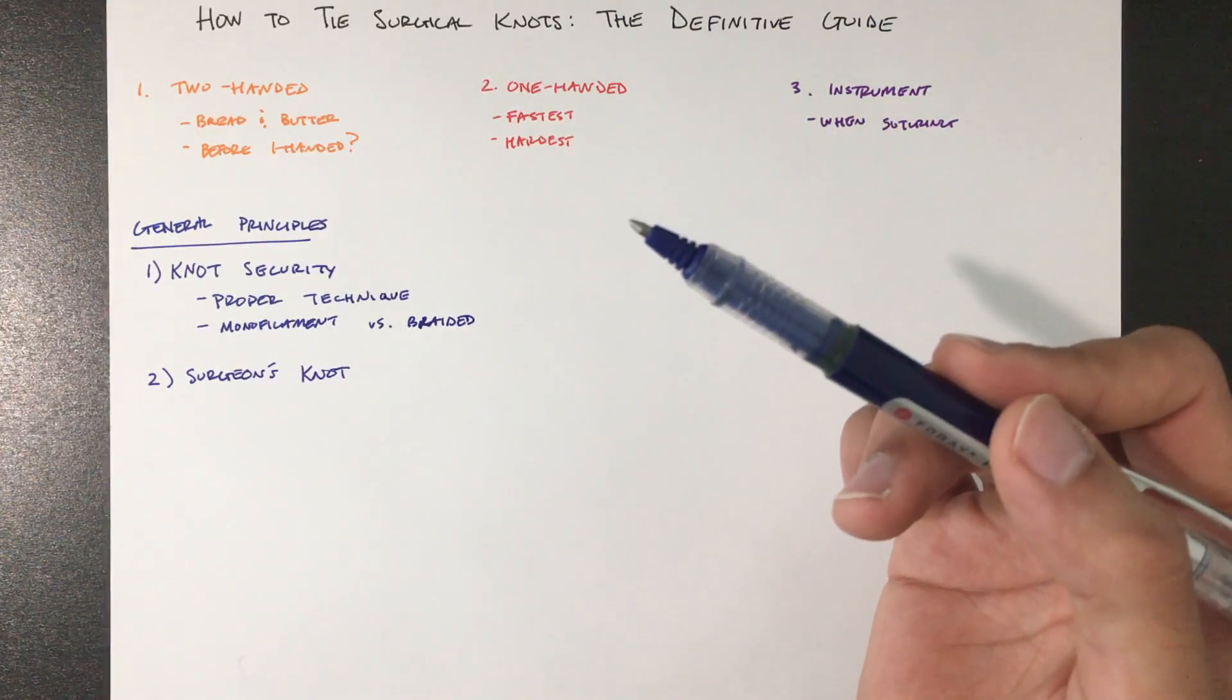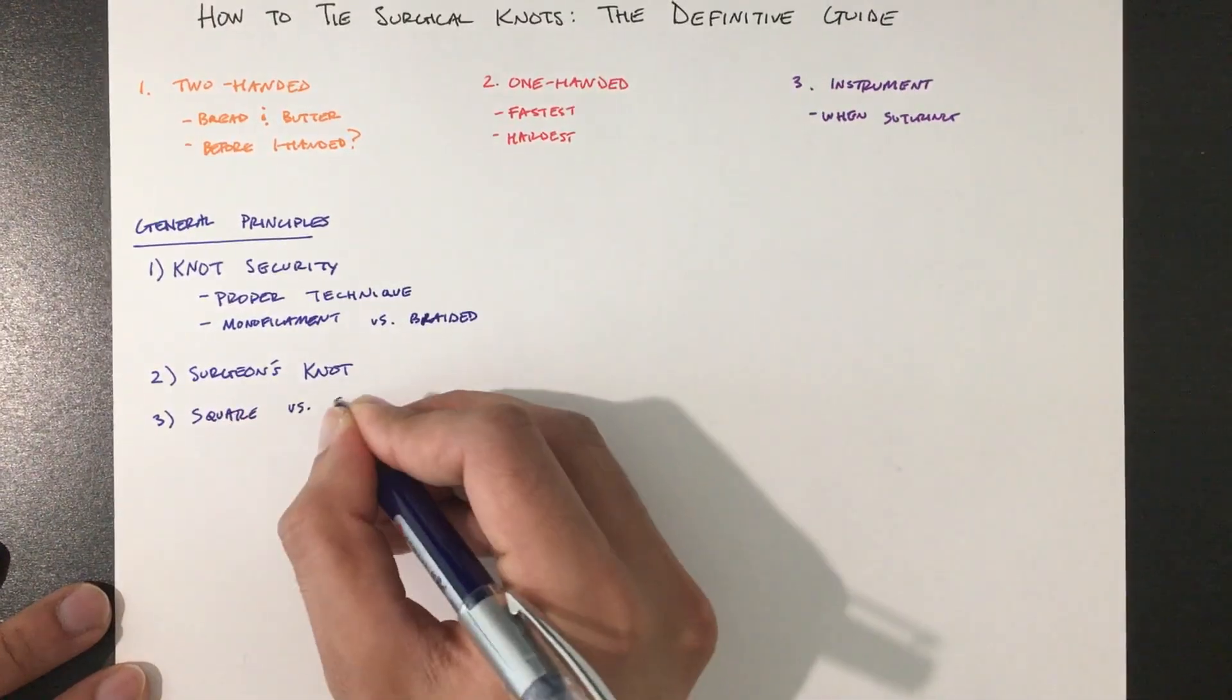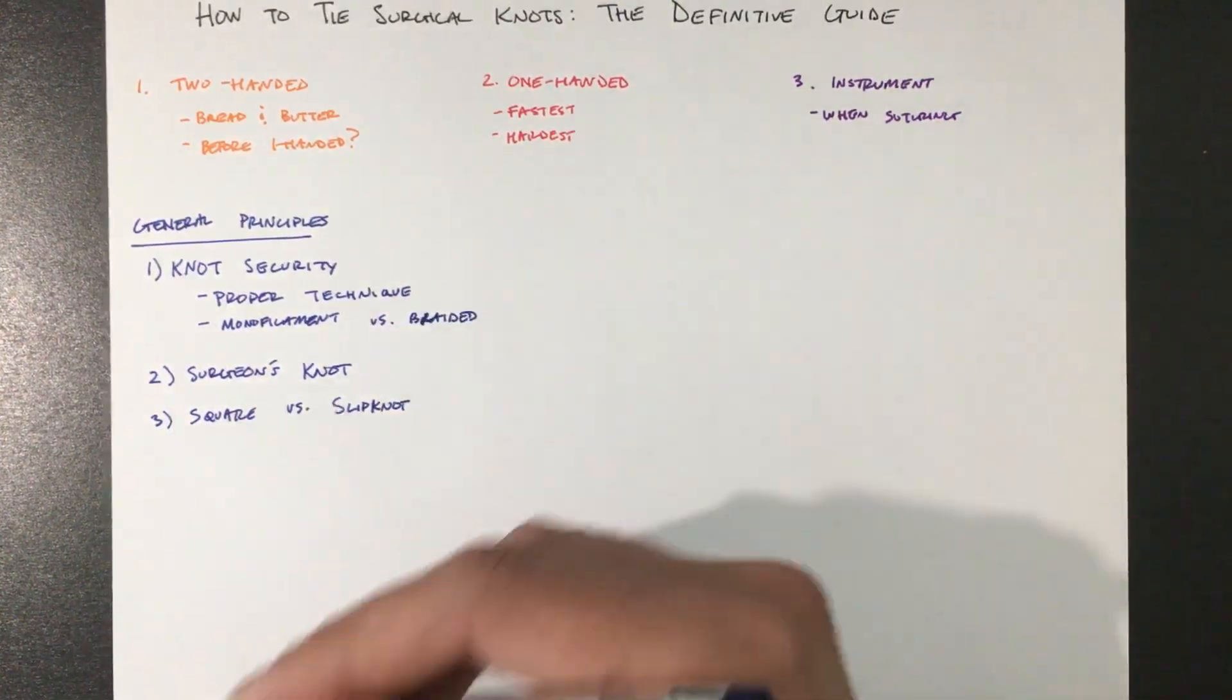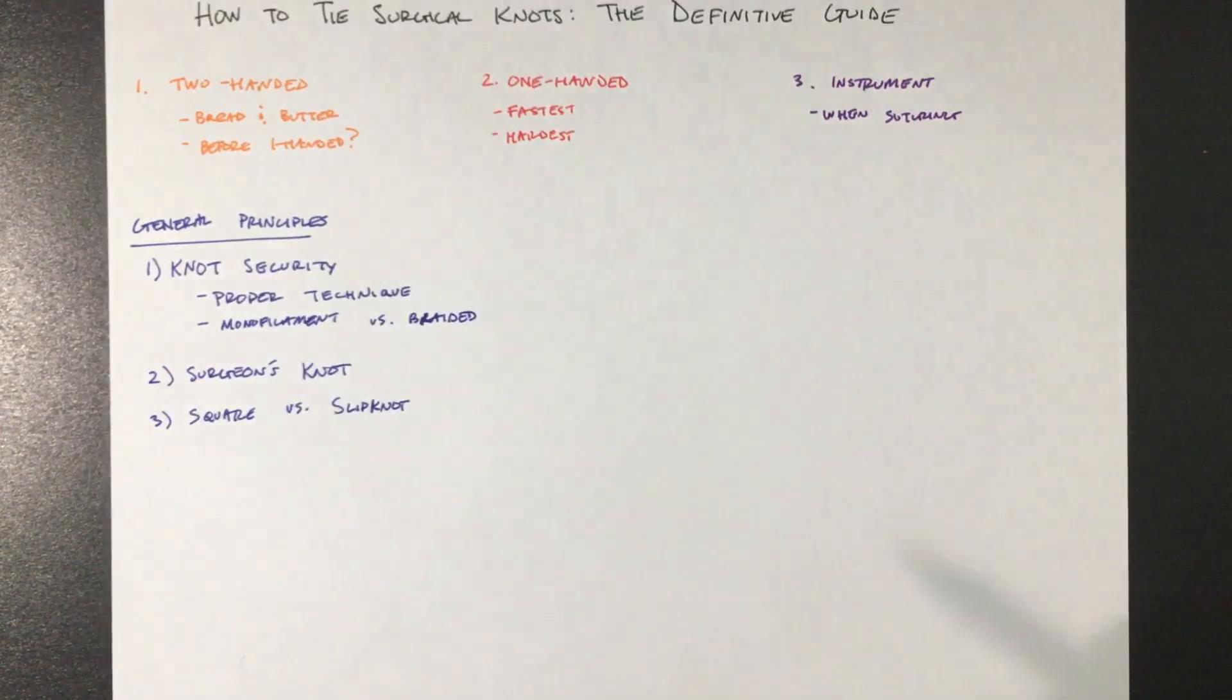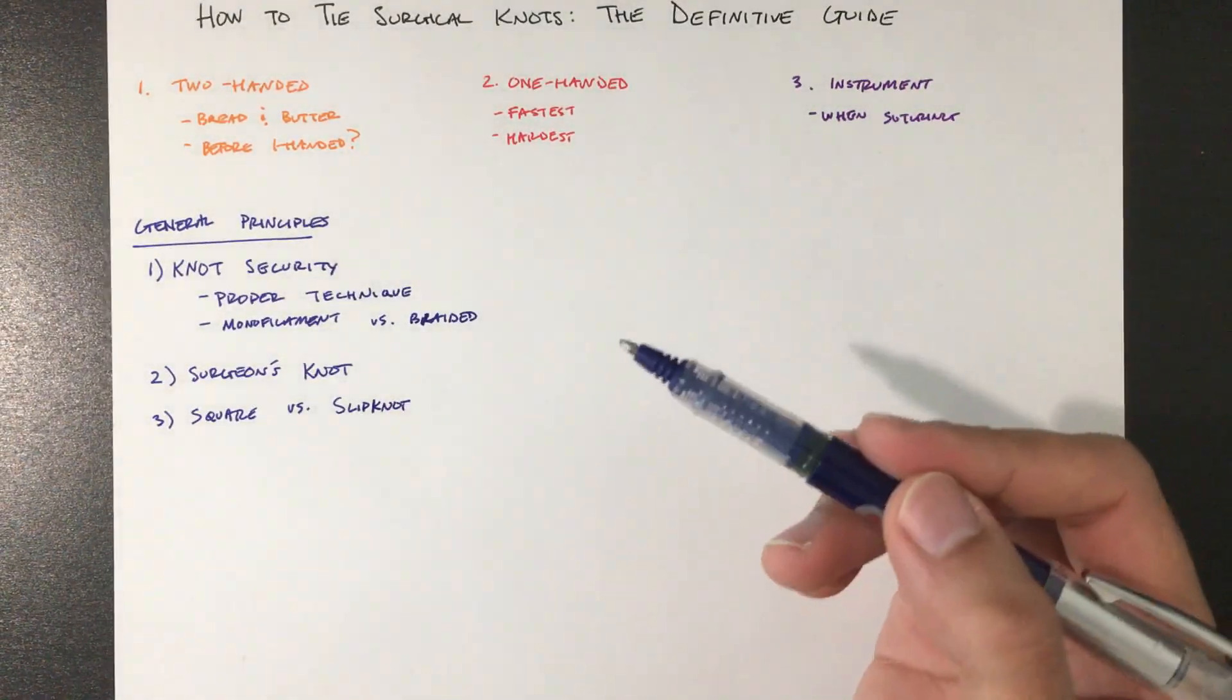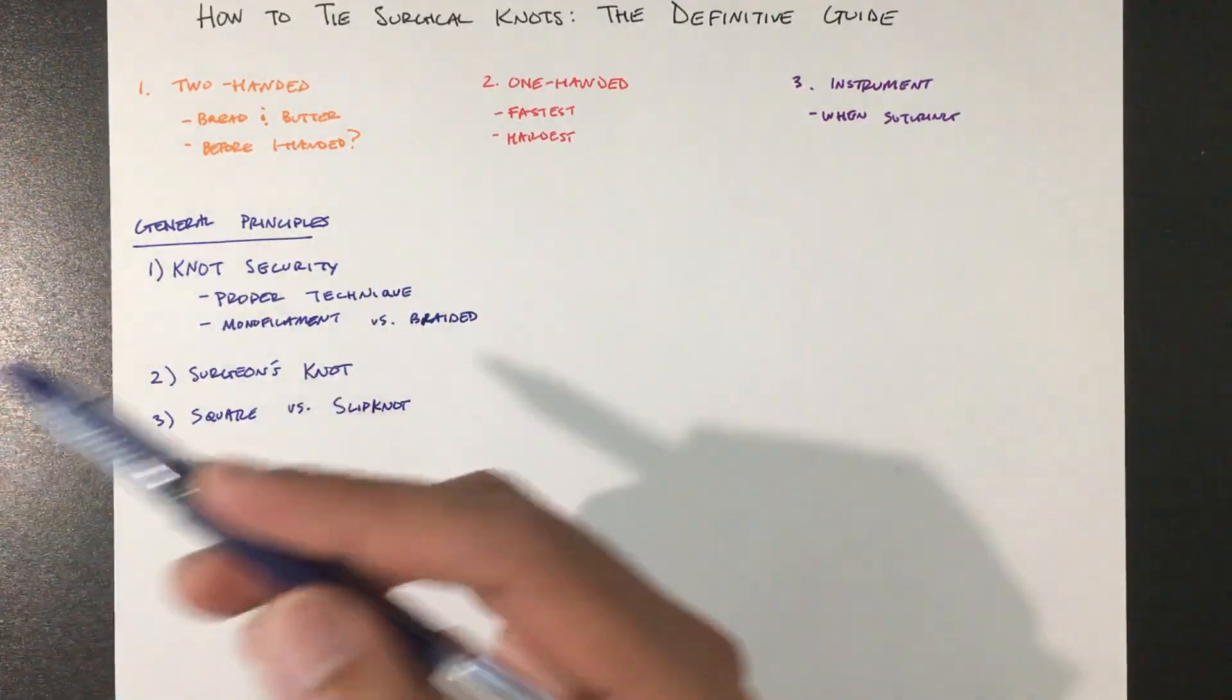Next is the square versus slipknot. So a slipknot is when you throw two throws in the same direction. Similar to the surgeon's knot, this lets you secure without locking and prevent air knots. Square knots are what you want to be tying to lock each suture in place.